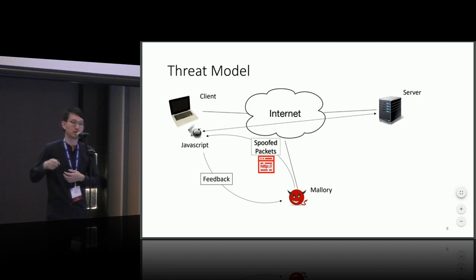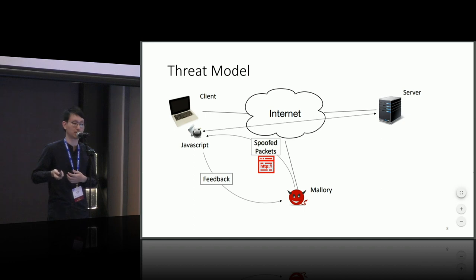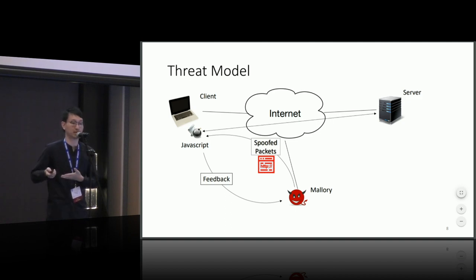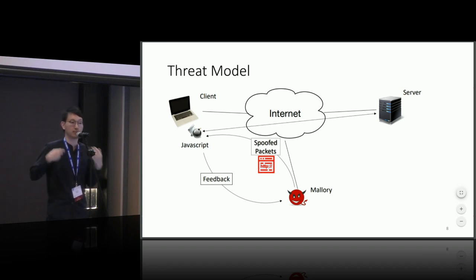Since the JavaScript has no privilege, it cannot peer into the victim connection and steal the secret. Instead, we rely on a side channel to infer the behaviors of how the client responds to those spoofed packets. Based on the feedback, the attacker can guess multiple times and finally figure out the correct secret.